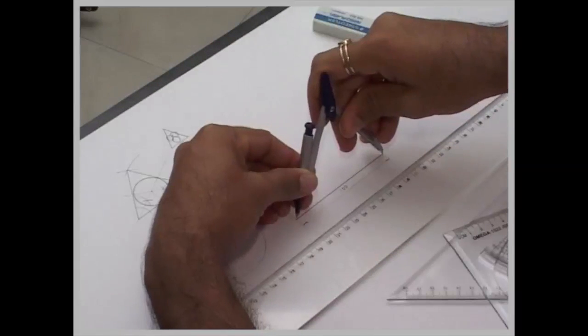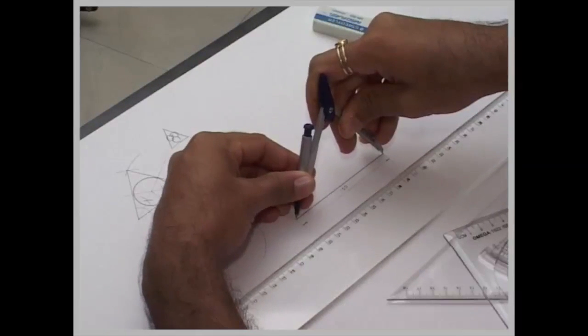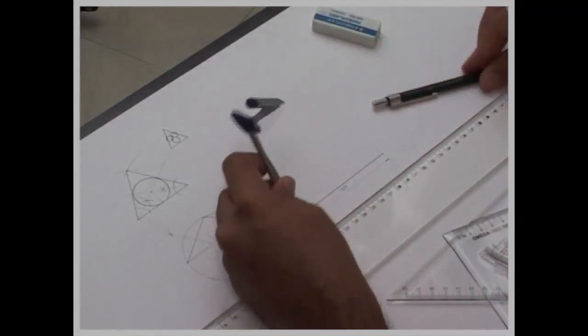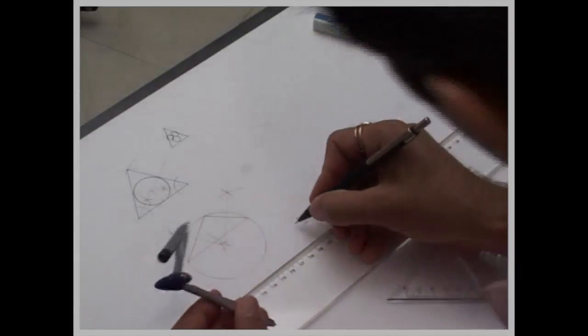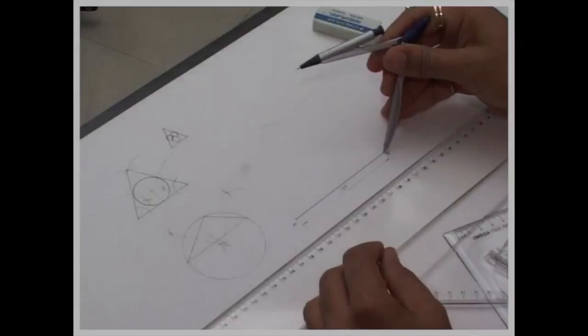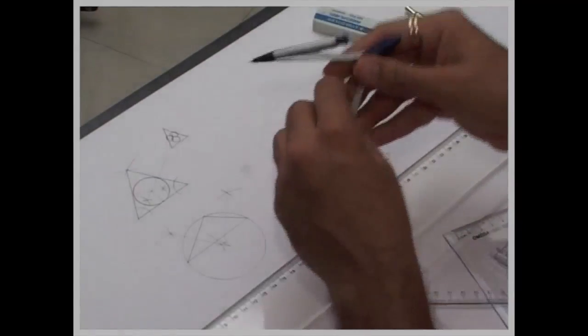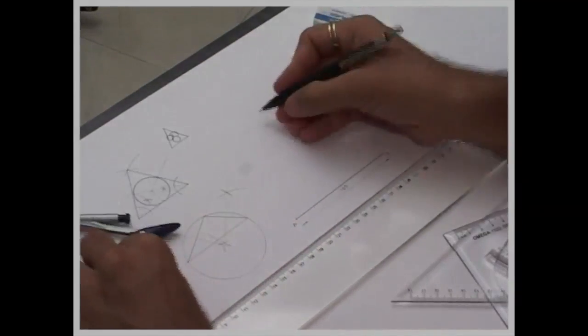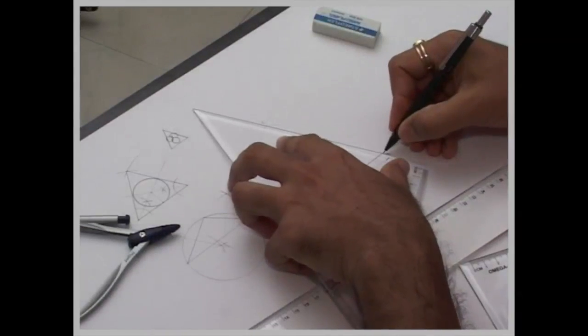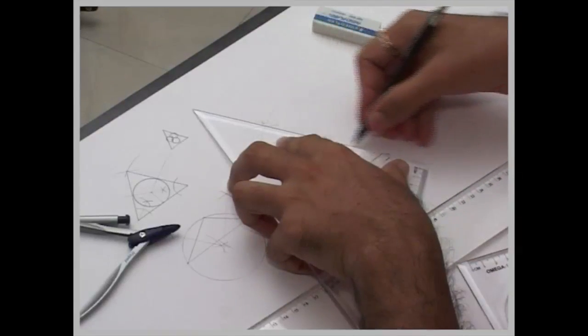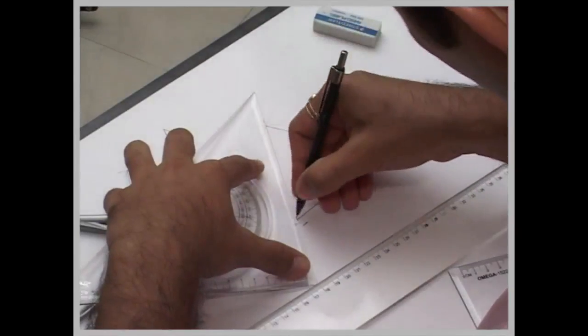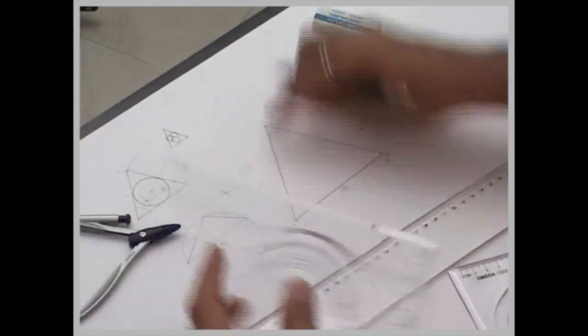Now, we will take side AB and from B will cut this up and from A will cut this up, wherever they will meet, that is point C, rejoin.